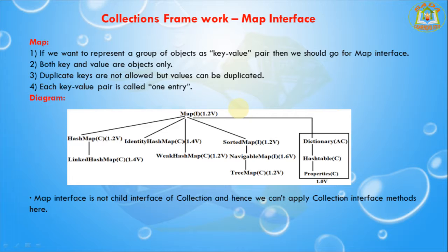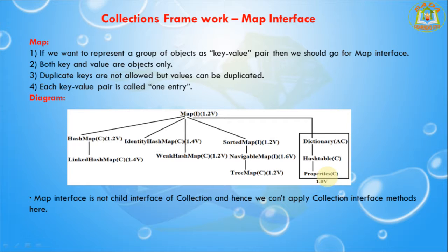Map is an individual interface. These are the implementation classes of the Map interface. There are also legacy classes of the Map interface. The Dictionary abstract class has Hashtable and Properties classes.